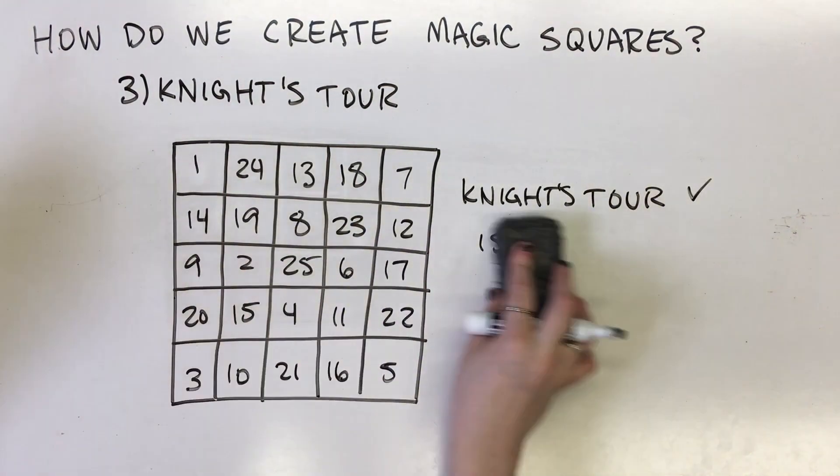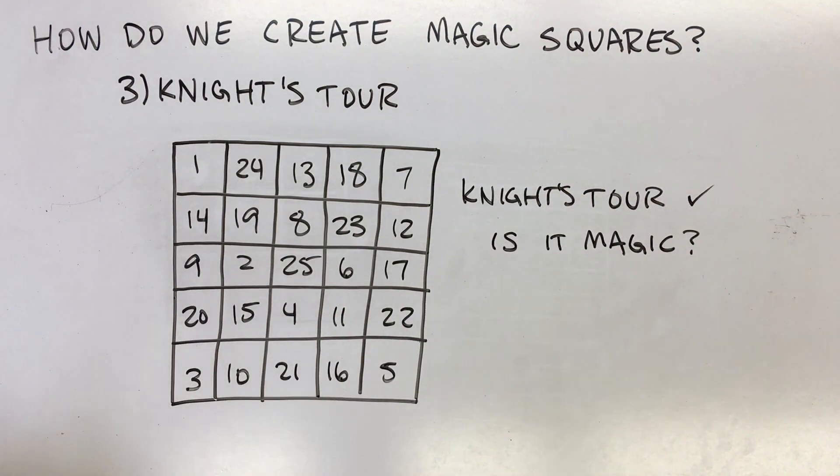When the diagonals do not add up to the magic constant, the path is simply called a magic tour and results in a semi-magic square.